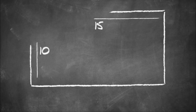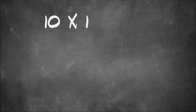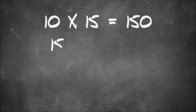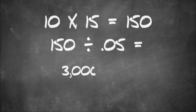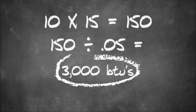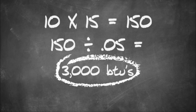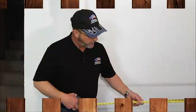Get your tape measure and measure the length and the width of the room that you want to cool, rounding each dimension down to an even number. This room that I'm in is approximately 10 feet by 15 feet. Multiply those two numbers together to get your square footage, then divide it by 0.05. Your end result will be the number of BTUs you need to cool your room without the air conditioner running non-stop, or getting one too large that doesn't run enough to remove the humidity.